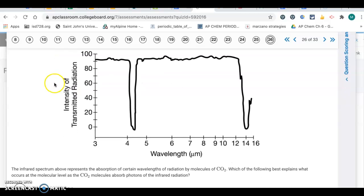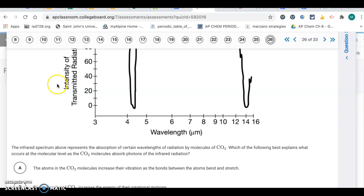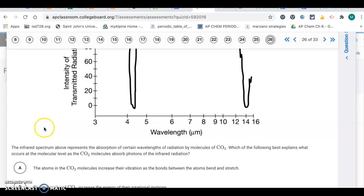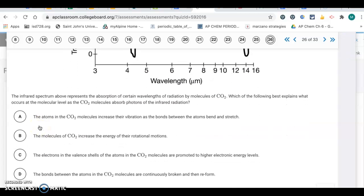Question 26. The infrared spectrum above represents the absorption of certain wavelengths of radiation by molecules of CO2. Which of the following best explains what occurs at the molecular level as a CO2 molecule absorbs photons of infrared radiation? Going back to that same section of notes. This is talking about infrared radiation, so infrared radiation is associated with molecular vibrational levels. We want to look for vibrational levels. The atoms of CO2 molecules increase their vibration, so that's the answer, letter A.